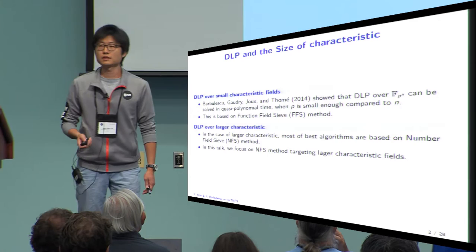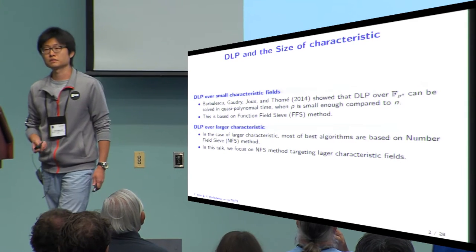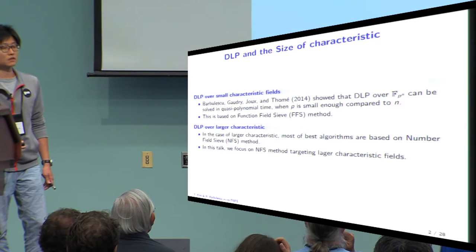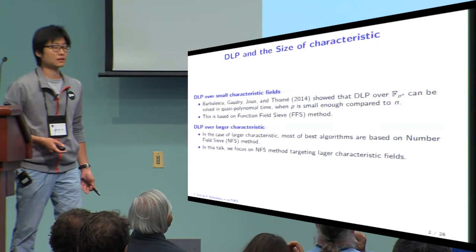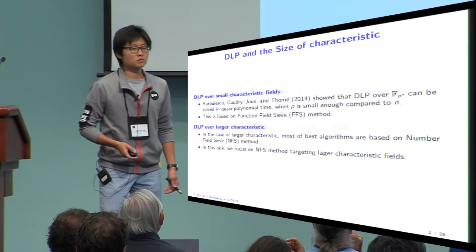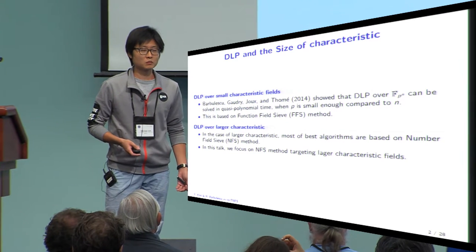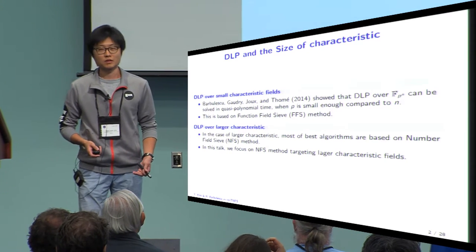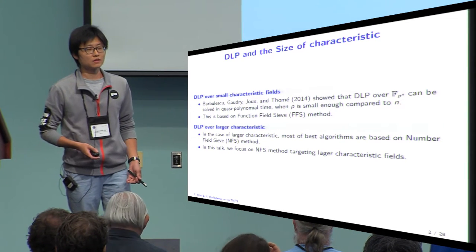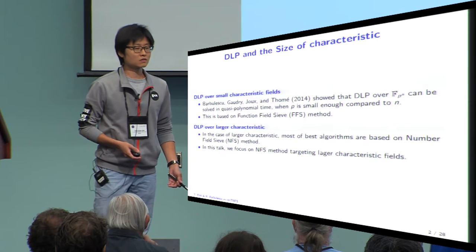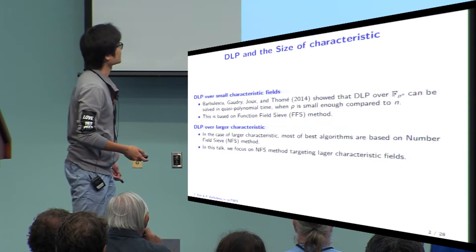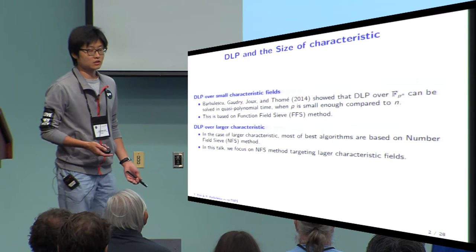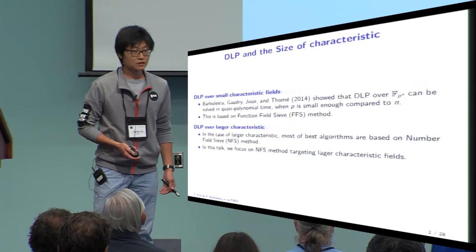On the other hand, if DLP is defined over a large characteristic field, then the best known algorithms are based on the number field sieve. In this talk, we focus on NFS, which targets large characteristic fields.